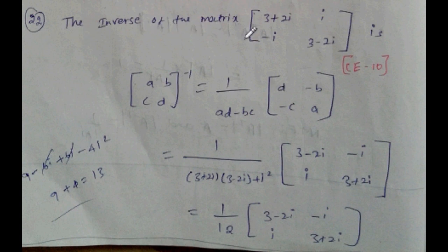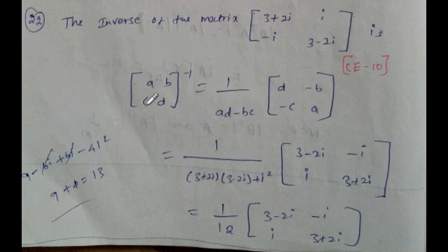Find the inverse of the complex matrix [3+2i, i; -i, 3-2i]. Using the standard formula: swap diagonal elements (changing place) and change signs of off-diagonal elements (changing sign). Substituting A, B, C, D values, then multiply — on simplification the inverse equals (1/12) times [3-2i, -i; i, 3+2i].